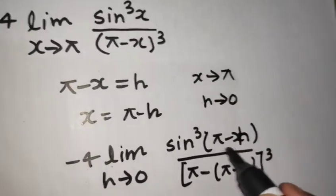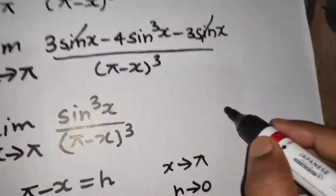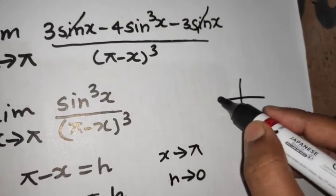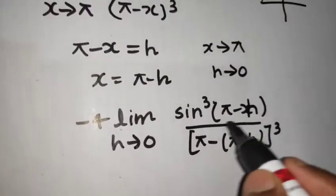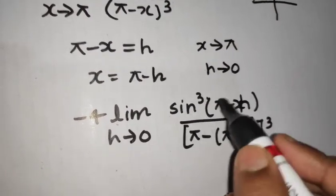You know sin of pi minus h will lie anywhere in the second quadrant and in the second quadrant sin and cosec are positive. So this will give you sin h only and its cube.